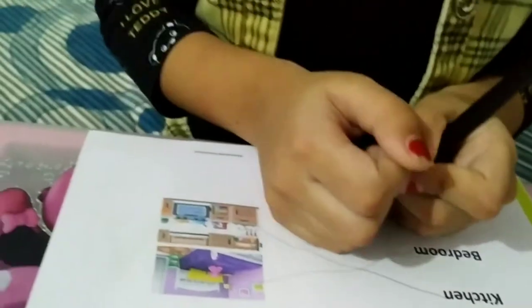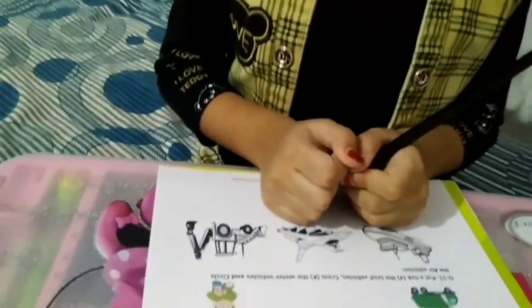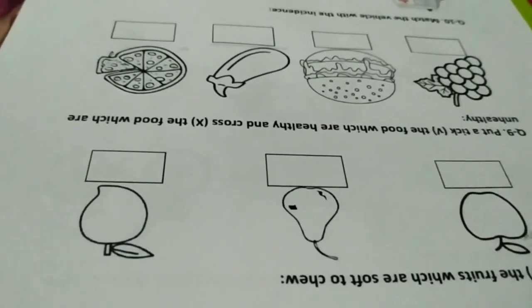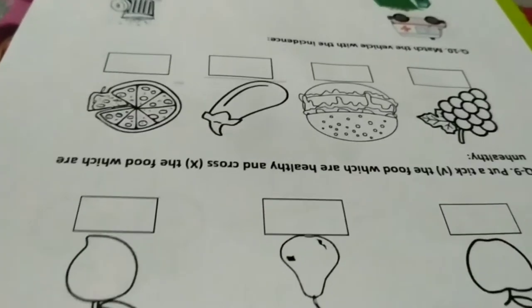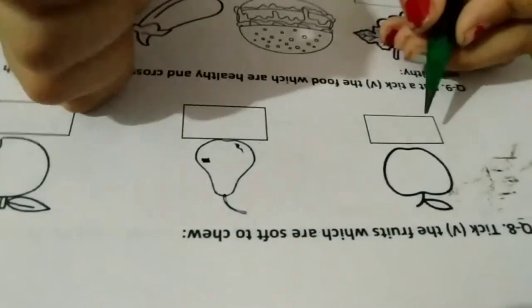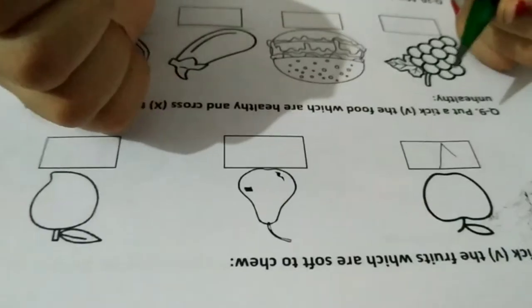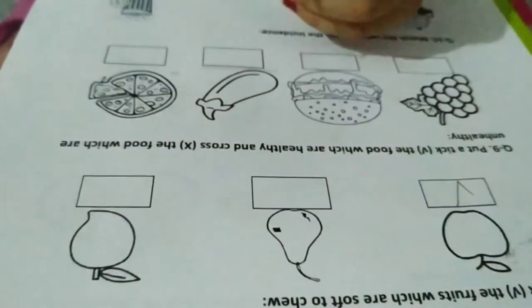Question 8. Tick the fruit which are soft to chew. Time 20. Bye-bye.